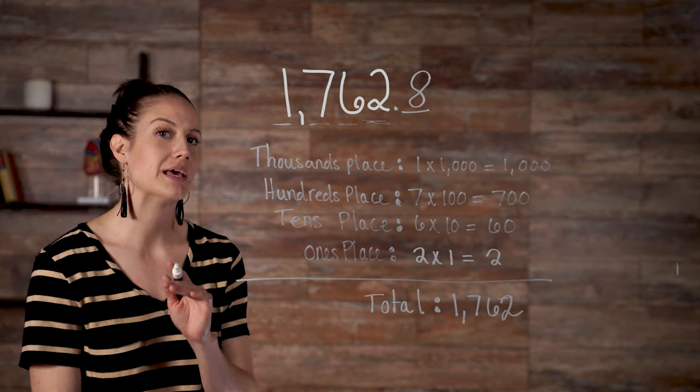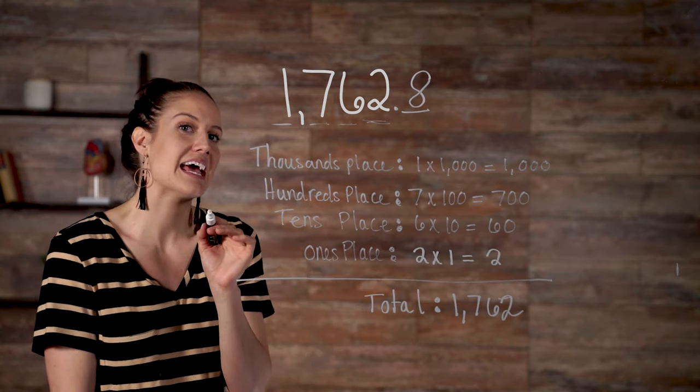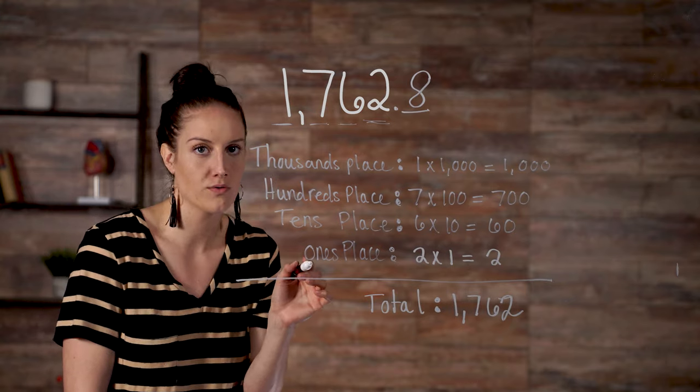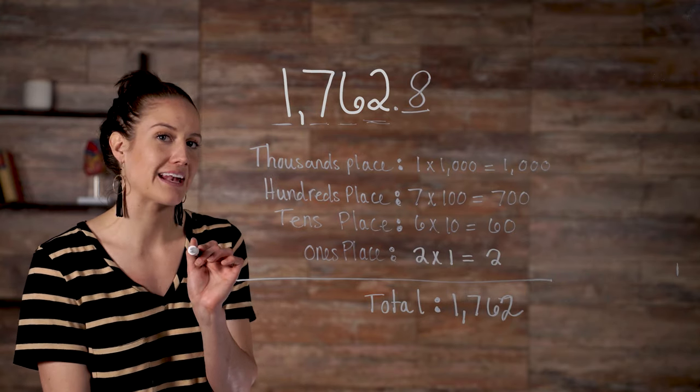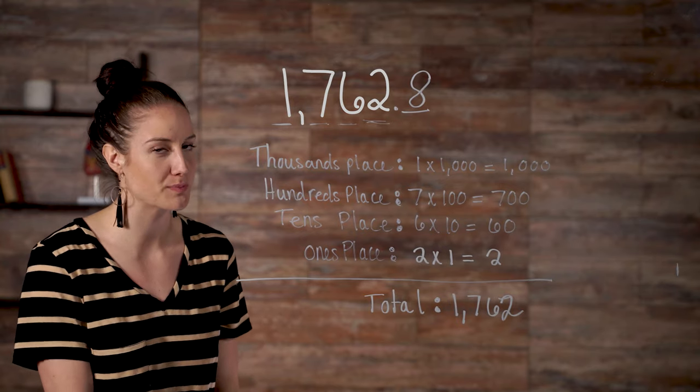So that was a review of numbers and their place value. Let's take a look at how to actually multiply decimals. You multiply decimals just like you would normal whole numbers. The trick is understanding how and when to move the decimal point so you get the right answer. We'll use this equation to show how it's done.